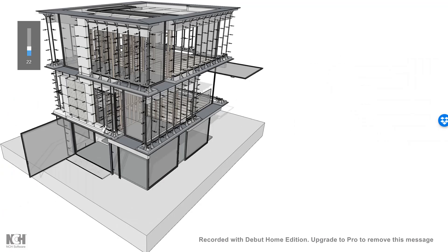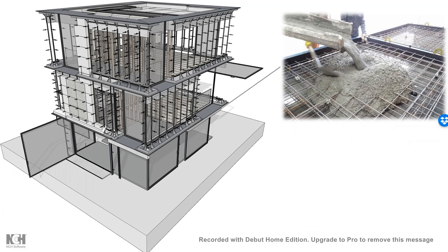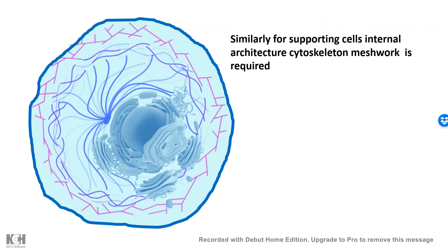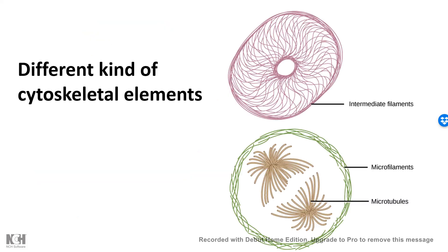If we consider a concrete house, the whole structure is supported by a meshwork of iron rods, as if these iron rods are the skeleton of this house. Similarly, for our cell, there are inner meshwork of cytoskeletal elements, which involves several kinds of cytoskeletal elements, like actin-based microfilaments, intermediate filaments, and microtubules, which are made up of tubulin.